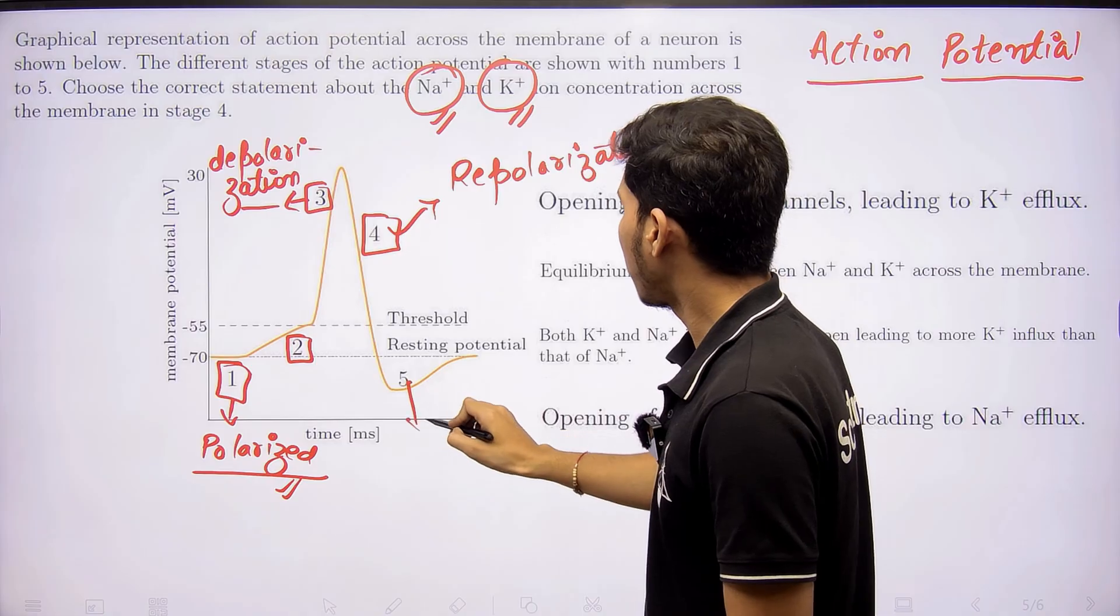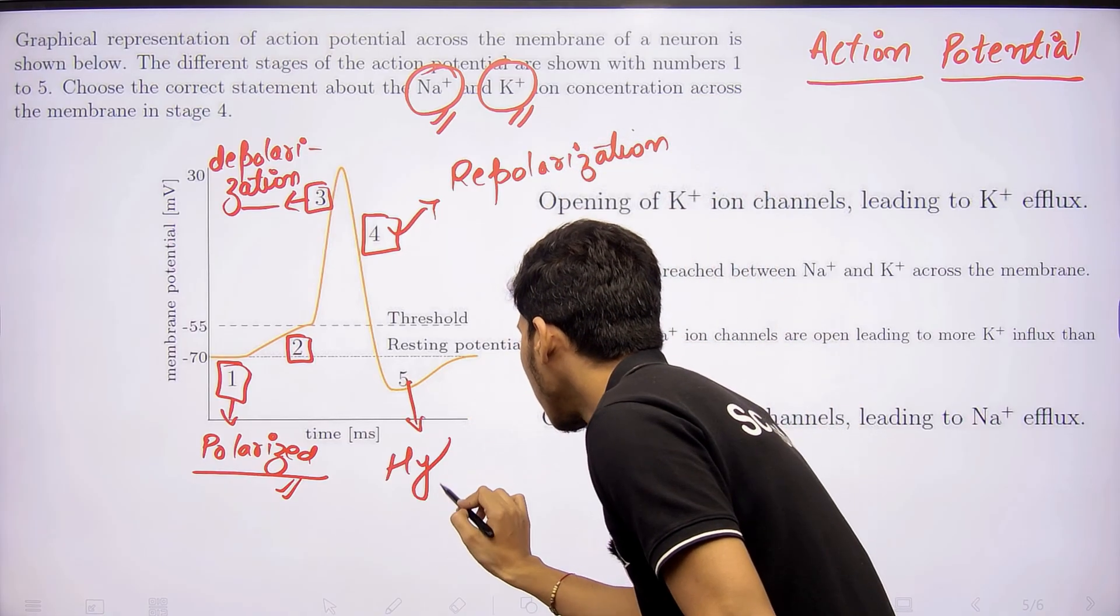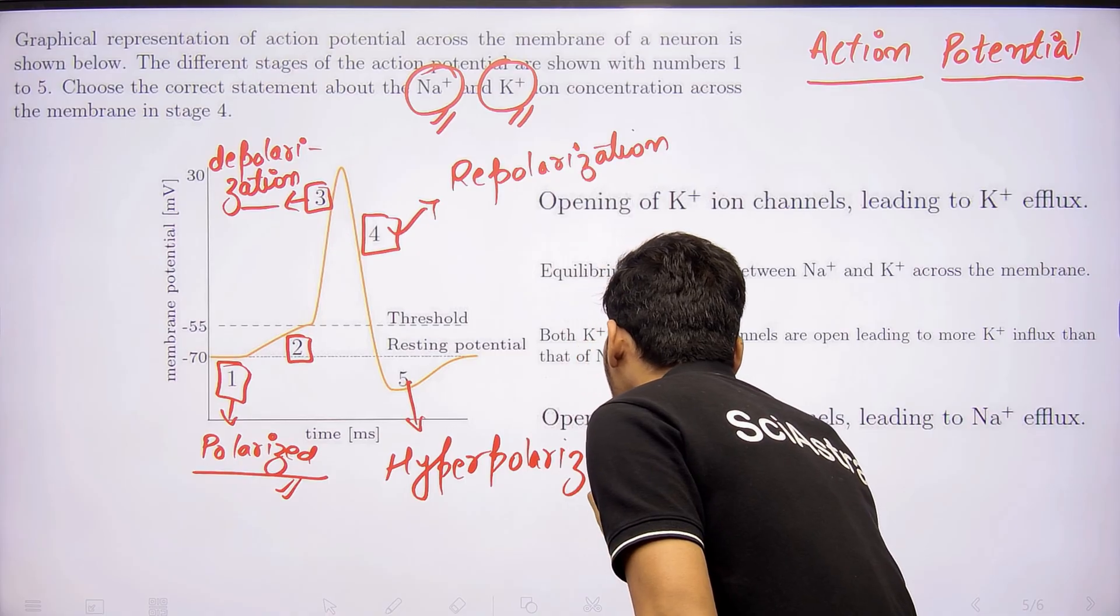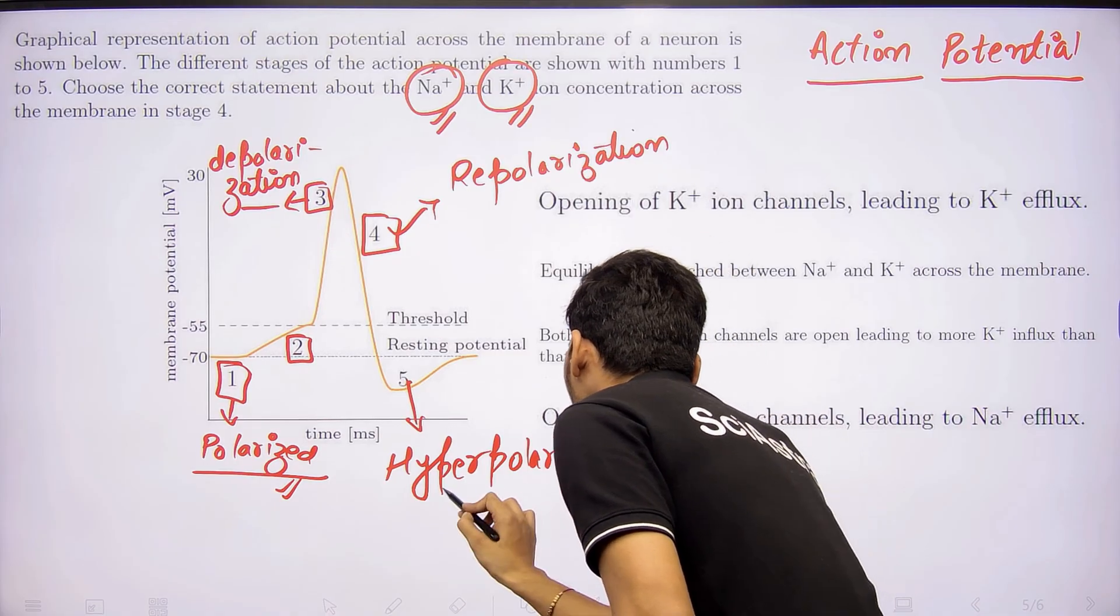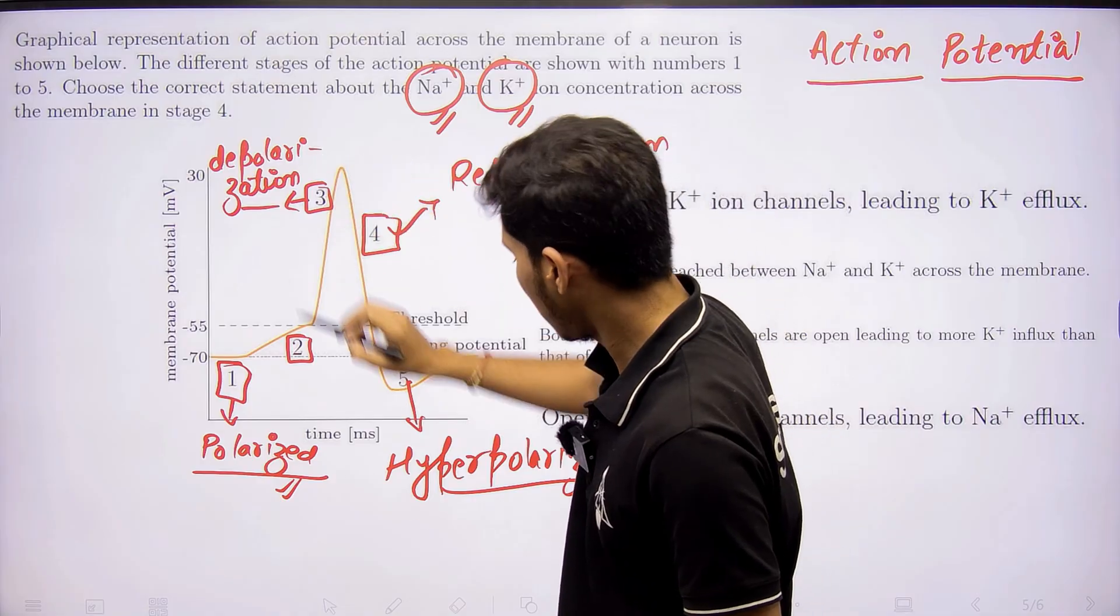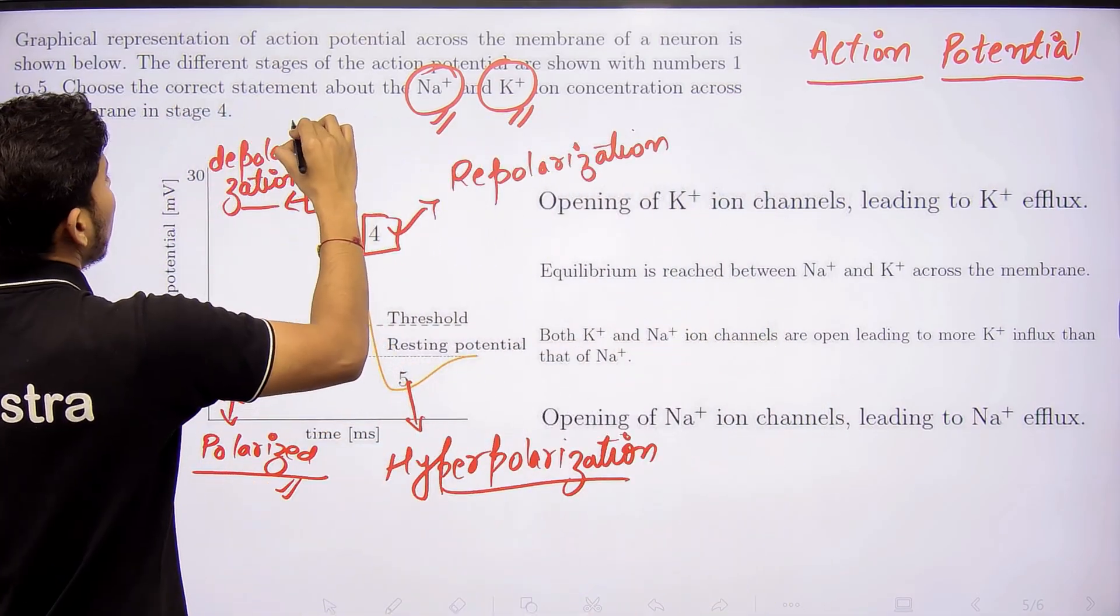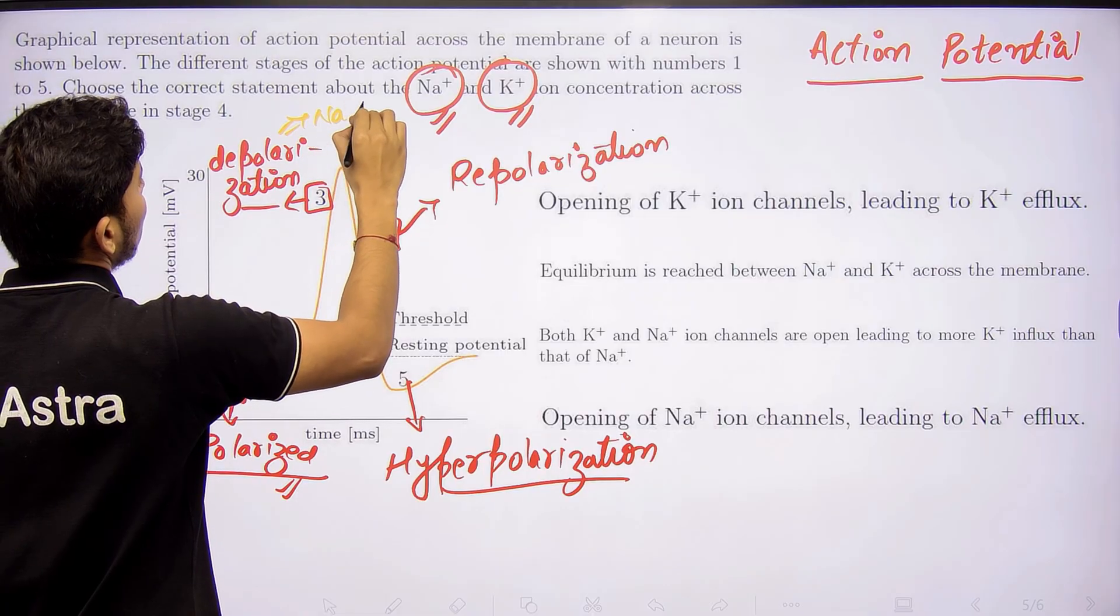This fifth step is known as hyperpolarization. Now, how do all these things happen? In depolarization state, voltage-gated sodium ion channels open.